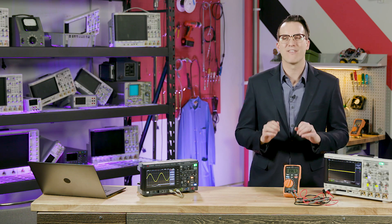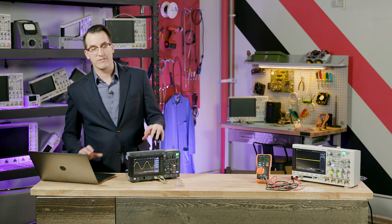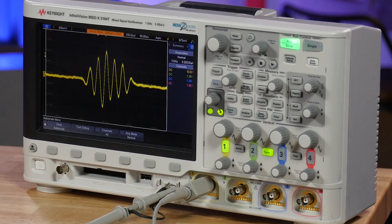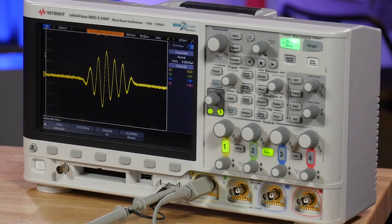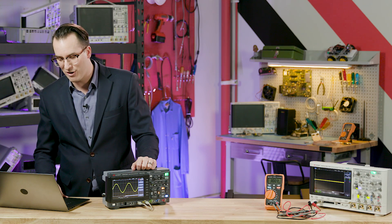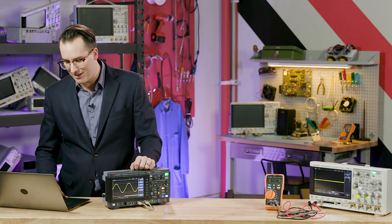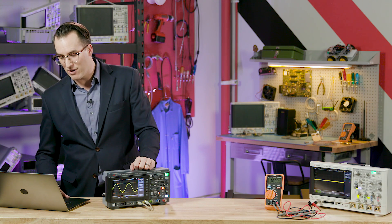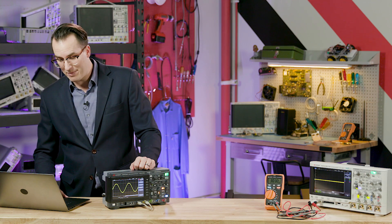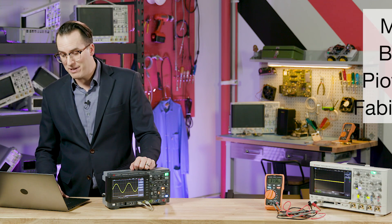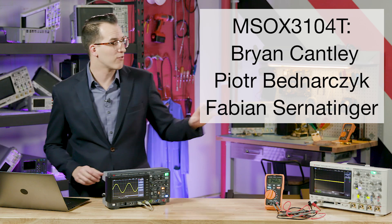So we're going to draw a winner for our 3000T scopes first. Why not? So we're going to give away three of these one gigahertz touchscreen oscilloscopes. Our first winner is Brian Cantley. Congratulations, Brian. Our second winner is Peter Bednarczyk. Congratulations, Peter. And then Fabian Cernetinger. Congratulations to those winners.